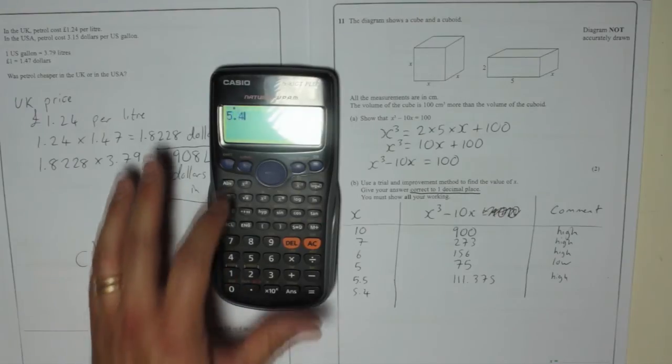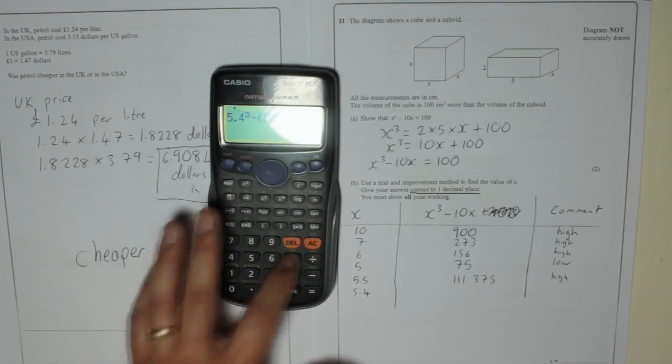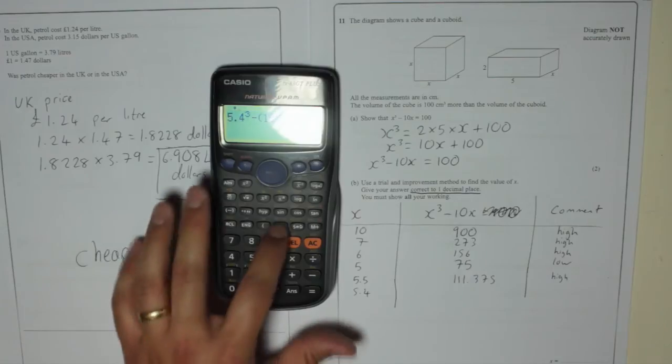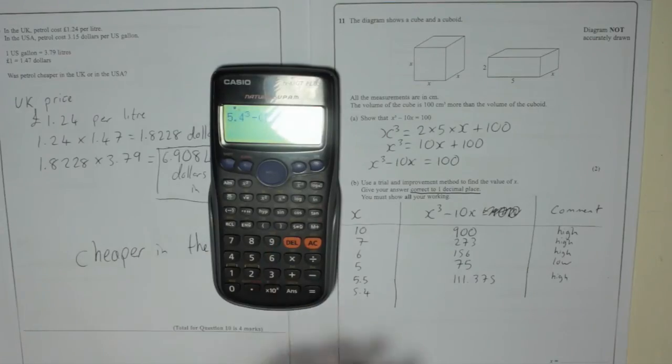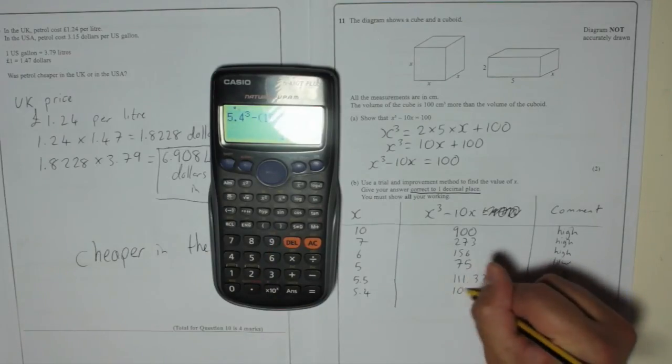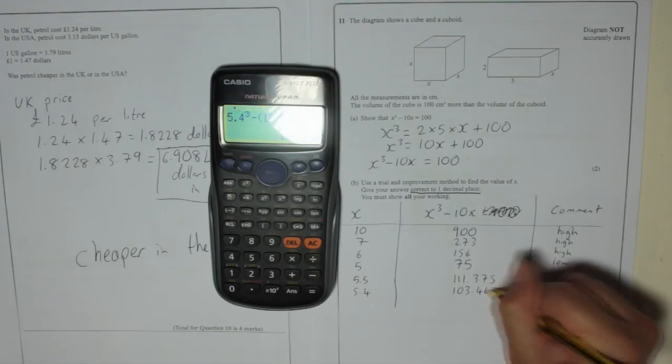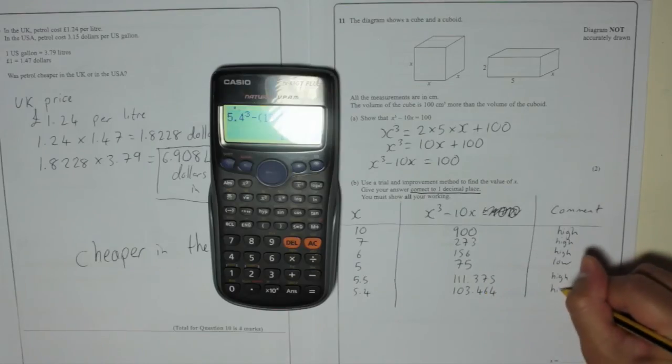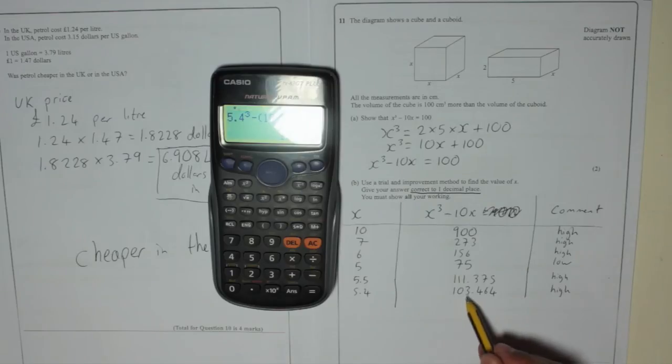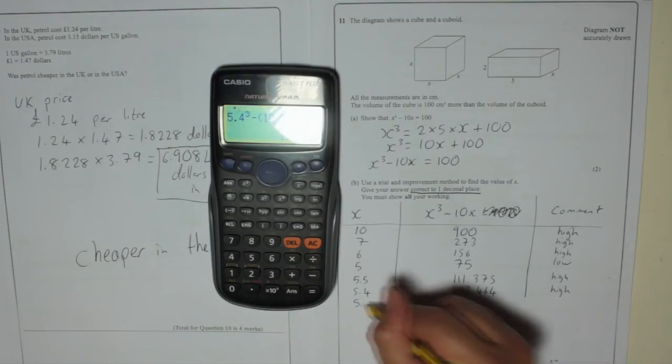5.4 cubed minus 10 times 5.4. 103.464. Again. Too high. We're really close to 100 this time. So I'm going to try 5.3. If you were really far last time you could have went down a few but we were fairly close.